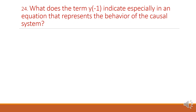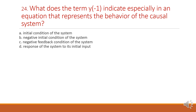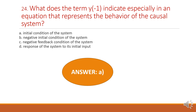Next question: what does the term y of minus 1 indicate, especially in an equation that represents the behavior of a causal system? Option A: initial condition of the system. Option B: negative initial condition. Option C: negative feedback condition. Option D: response of the system to its initial input. The answer is option A, initial condition of the system.